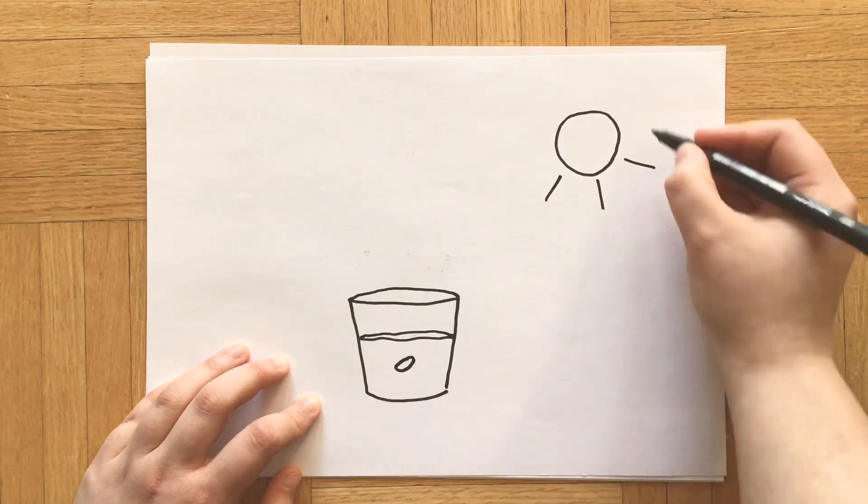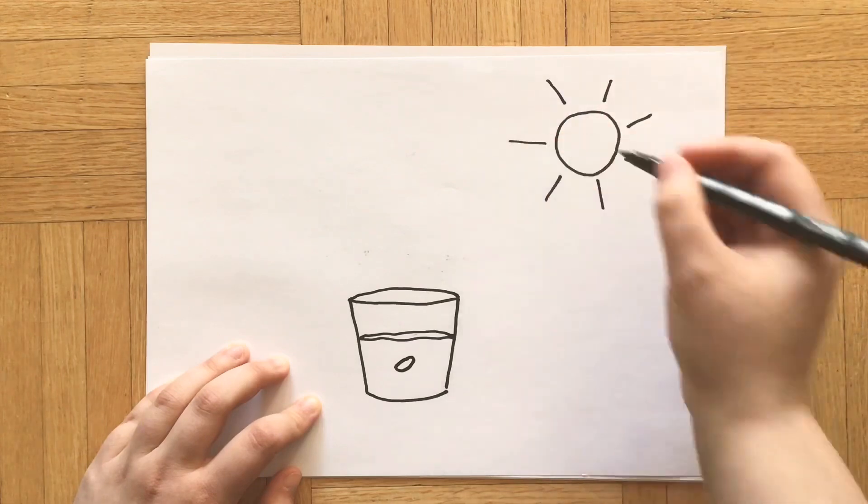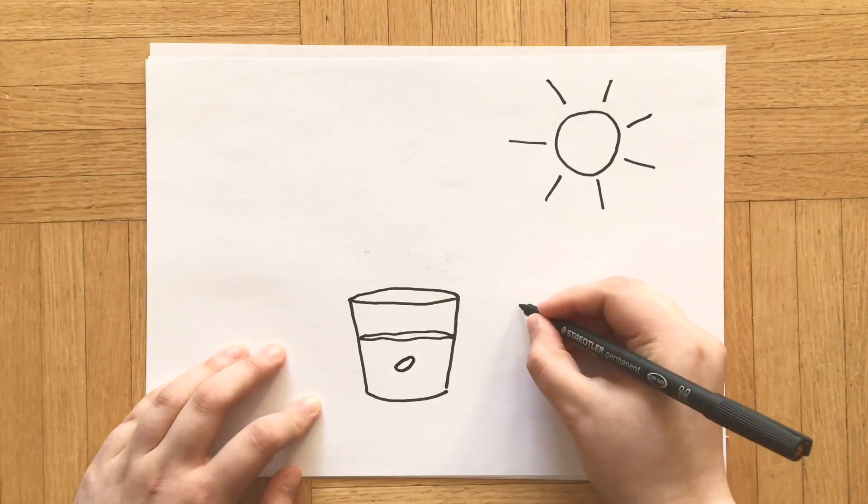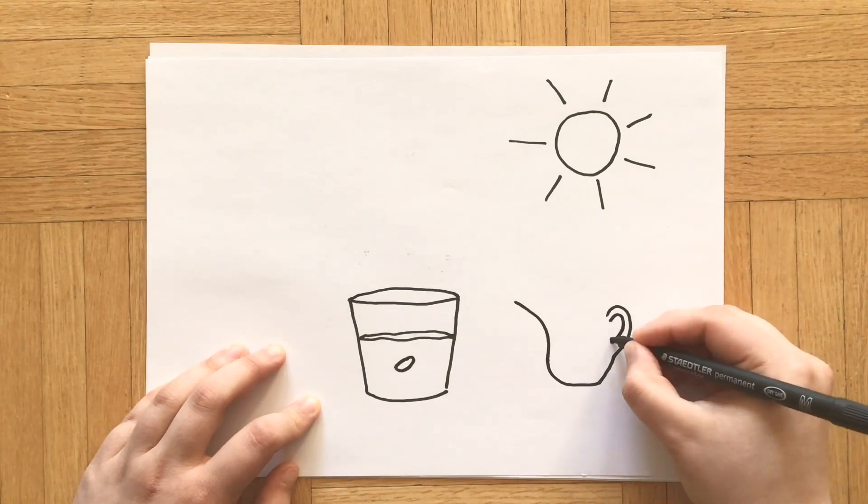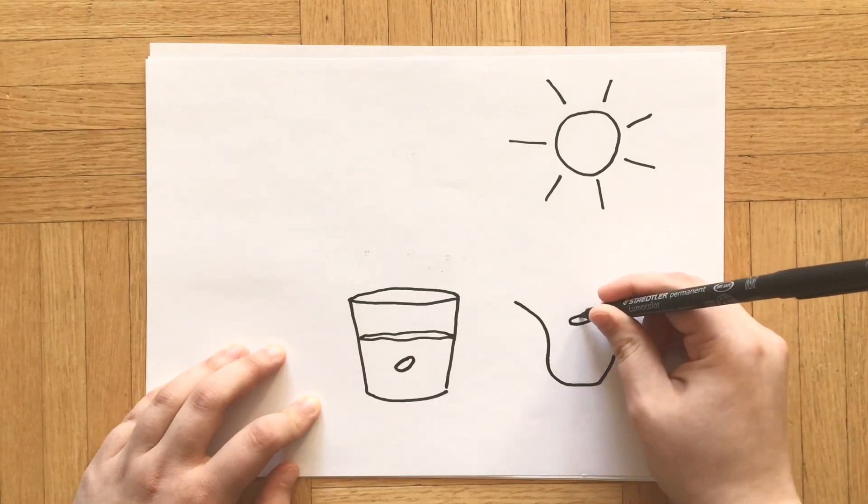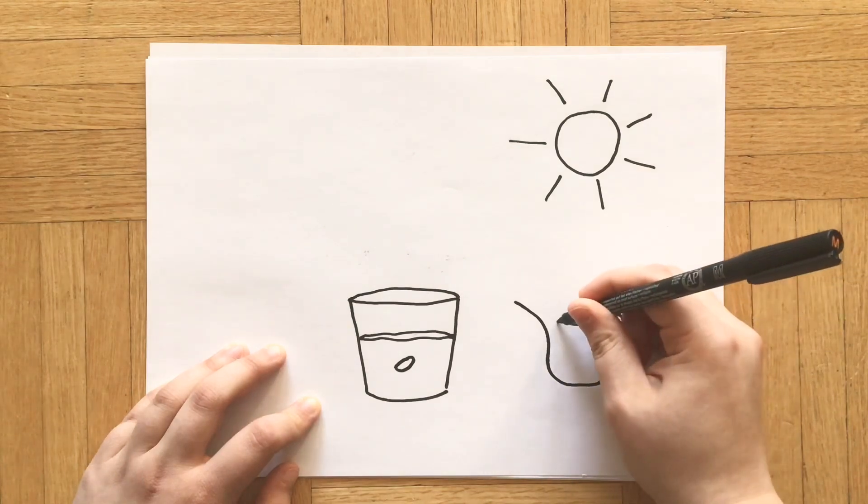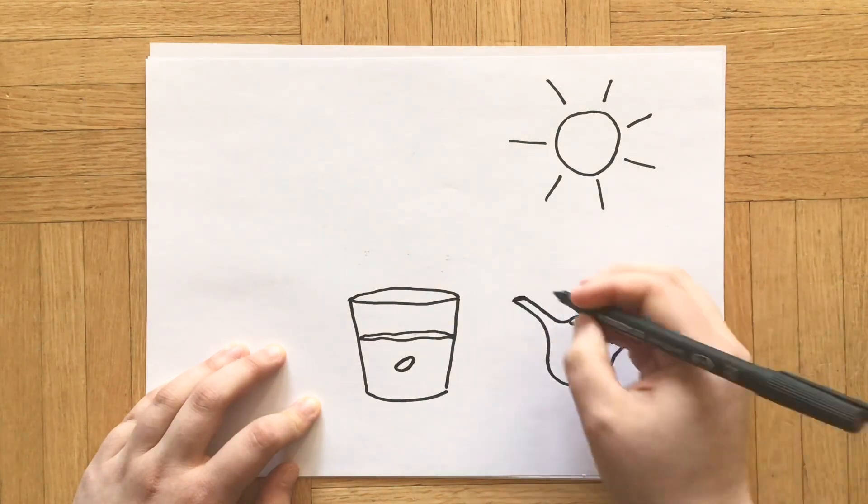In order to grow, a plant needs sunlight and they also need water. So it's very important that we put the plant in a place where they get a lot of sun and also water them every day.